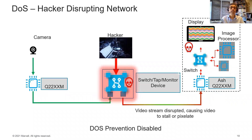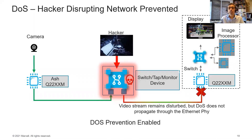However, the hacker can still disrupt the network so the video stream can be disturbed, causing video to stall or pixelate. When MacSec is enabled, because the data along the network has been encrypted, the hacker is not able to steal the data. We need to take additional measures so the video stream remains protected — denial of service does not propagate through the Ethernet PHY because that PHY has MacSec enabled and only encrypted data is passed through to the display.